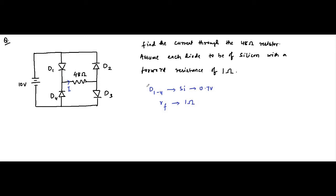The second important part of this question is to find out which diodes are activated and which are off — which means which diodes are forward biased and which diodes are reverse biased. This is dependent on their direction, in which they are connected to the polarity of the supply voltage.